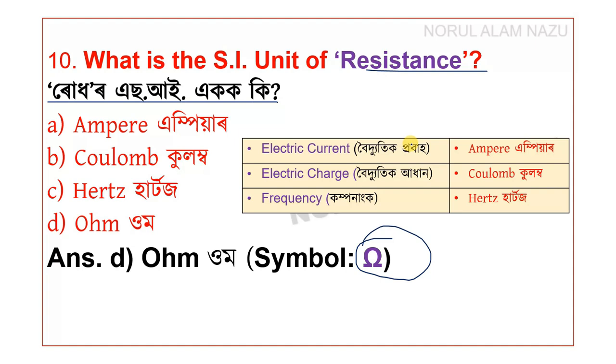Electric current: the SI unit of electric current is the ampere. Electric charge: the SI unit of electric charge is the coulomb.